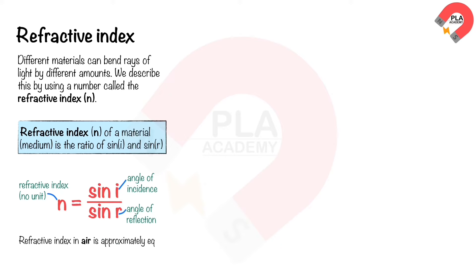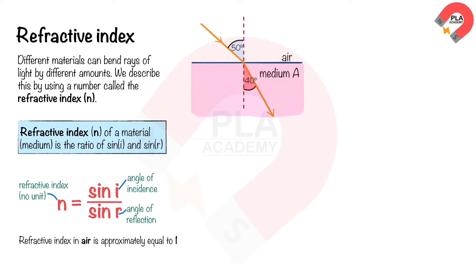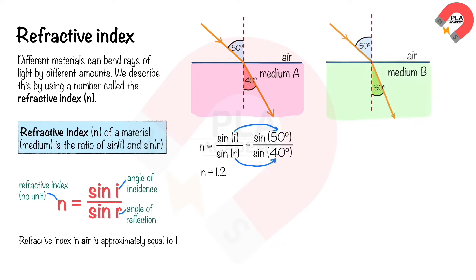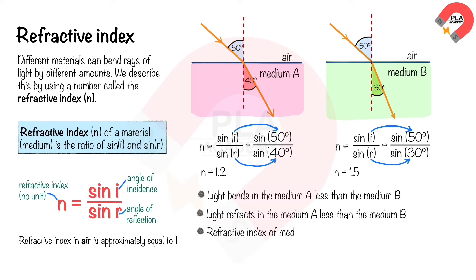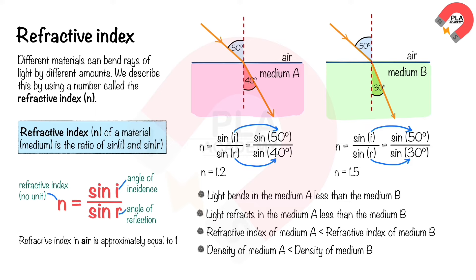Using the equation n = sin i / sin r: substituting i = 50° and r = 40° gives n = 1.2 for medium A. For medium B, substituting i = 50° and r = 30° gives n = 1.5. This shows light bends less in medium A than medium B, so medium A has a lower refractive index and lower density than medium B.